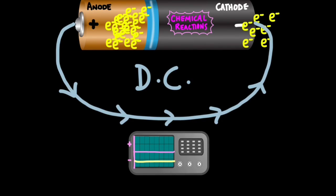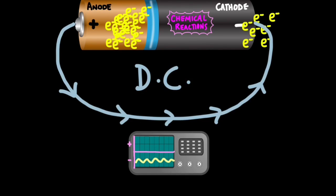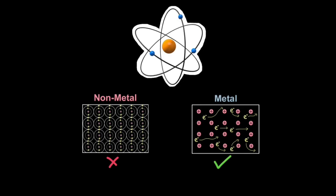A truly direct current will produce only a straight line because it's a constant source of power. However, sometimes you can get pulsating traces which are also regarded as direct current because they stay in one area of the trace — either positive or negative — and don't cross between the two. By now you should be familiar that electricity is due to a flow of electrons, those negatively charged particles that orbit the nucleus of atoms. In non-metals those electrons are confined to the shells around the nuclei, but in metals they're free to flow between them, which is why metals conduct electricity.